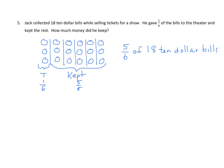If we counted these, we would see that we have 5 groups of 3, which is 15. So how much does he keep? He keeps 15 ten-dollar bills. We'll express that as money. What's 15 ten-dollar bills? Fifteen times ten dollars equals one hundred fifty dollars. And again, we should make the statement, Jack kept 15 ten-dollar bills, which is one hundred fifty dollars.